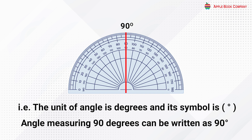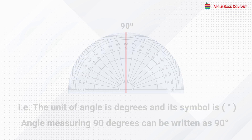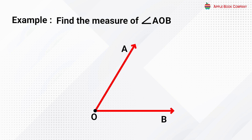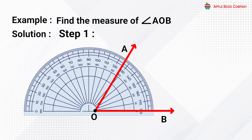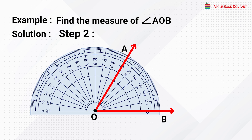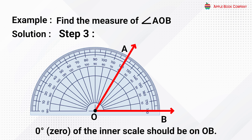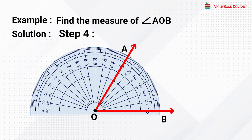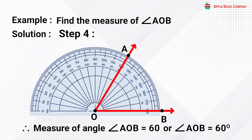Example: find the measure of angle AOB. Solution: to measure angle AOB, follow these steps. Step 1: place the baseline of the protractor on arm OB. Step 2: the center point of the protractor should be on vertex O. Step 3: 0 degrees of the inner scale should be on OB. Step 4: measure the angle AOB where arm OA crosses the scale. Therefore, the measure of angle AOB is equal to 60 degrees.